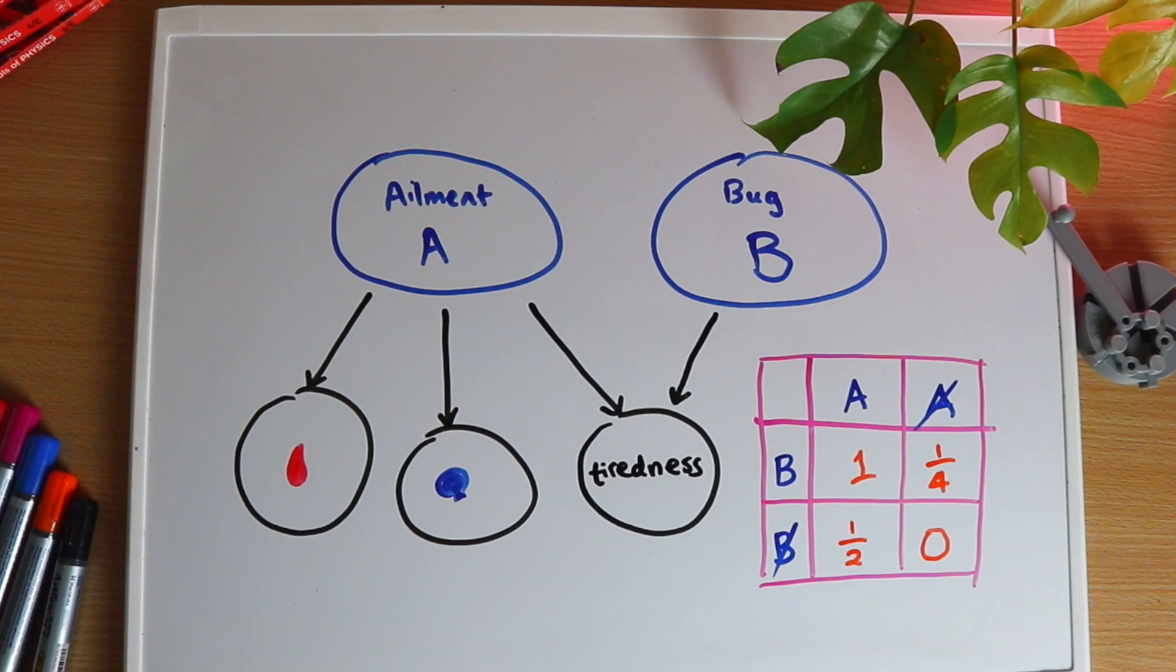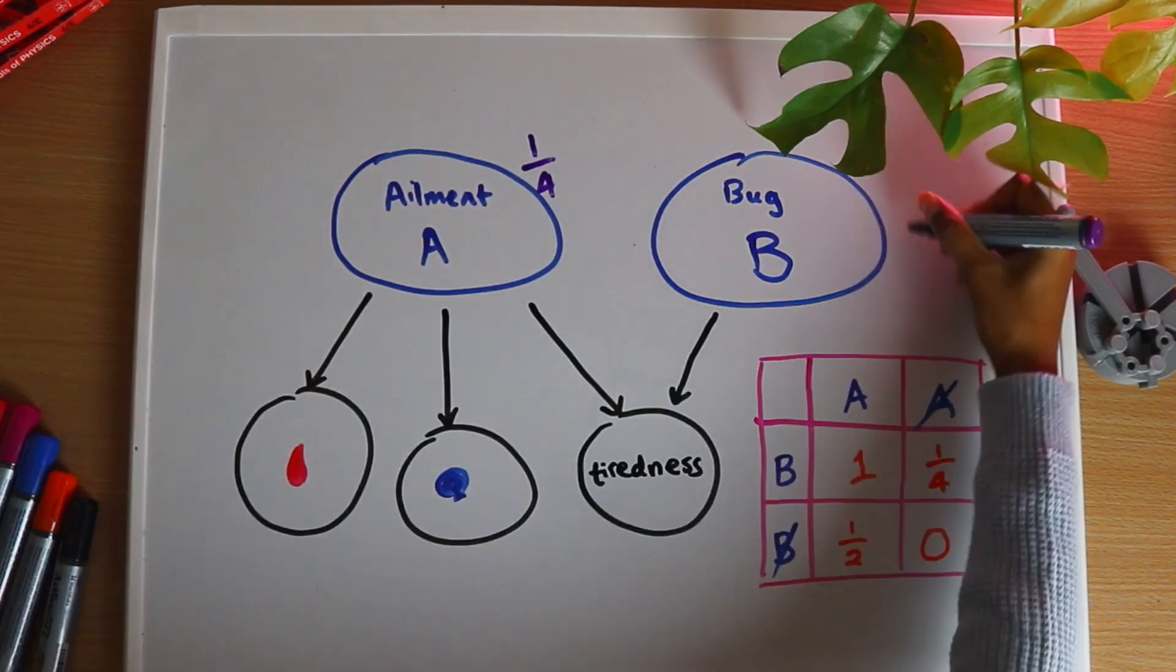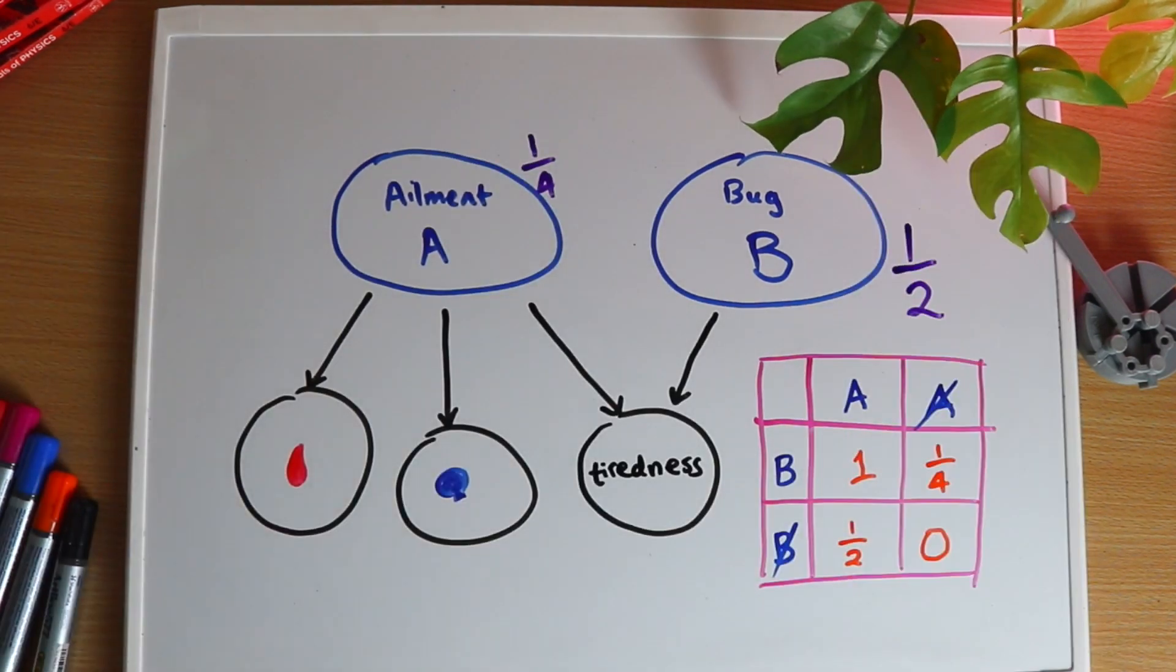Suppose that someone in this world is tired. Should you diagnose them with A or B or both? You might have said A since the symptom is more likely for A but that's not the only thing to think about. What if A is less common than B? Say its probability is a quarter and B's is a half. Given this new information how should you diagnose the patient?